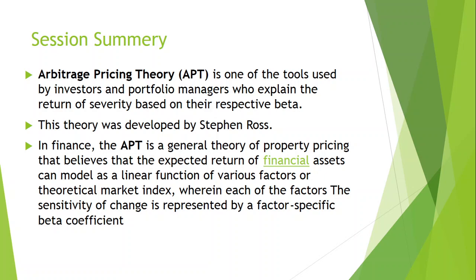Each investor has an objective to assign value to different securities by comparing expected returns with realized returns, categorizing them into three exclusive categories: undervalued securities, where expected return is less than realized return; efficiently priced securities, where expected return equals realized return; and overvalued securities, where expected return is greater than realized return. This identification is made similarly by almost all investors, as each one has homogeneous estimates about expected return and risk.